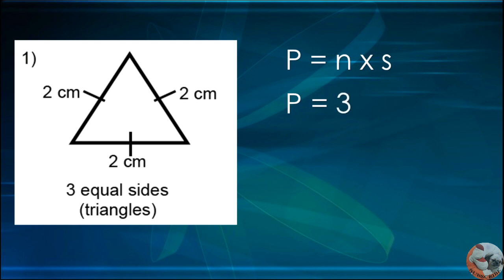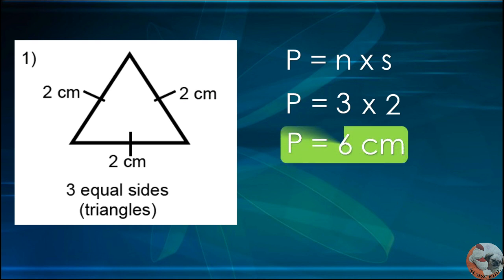Times the measurement of the side, or S, which is 2 cm. P equals 3 times 2, it is equal to 6 cm. So the perimeter of the triangle is 6 cm.